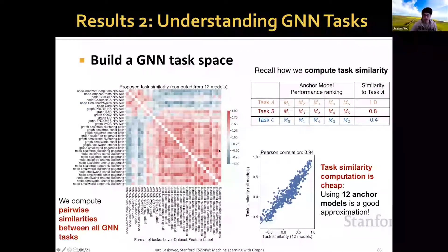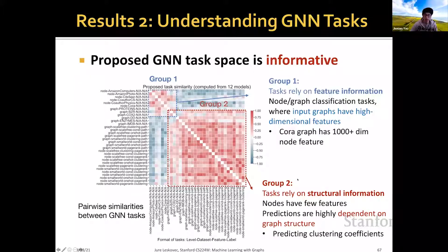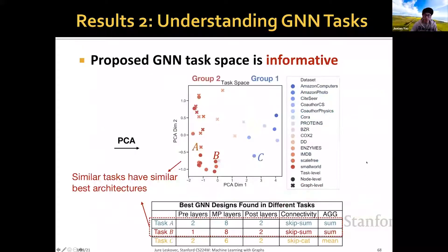The second key result is the understanding of GNN tasks. We found that GNN designs in different tasks vary significantly, which motivates studying a task space. Looking at design trade-offs across tasks like BZR, Proteins, and Small World, sometimes max aggregation is better, sometimes min, sometimes sum; similarly for number of layers. We compute pairwise similarity between all GNN tasks using 12 anchor models — already a good approximation. We identified two groups: Group A relies on feature information with high-dimensional input features, and Group B relies on structural information where predictions depend on graph structure. PCA visualization confirms that similar tasks have similar best architecture designs.